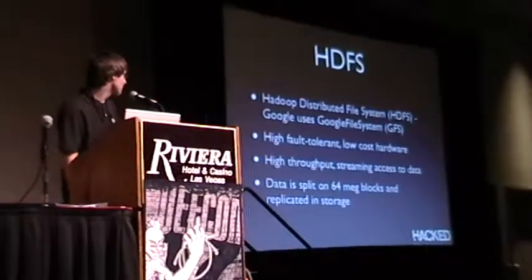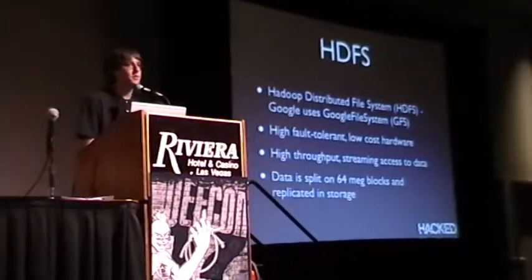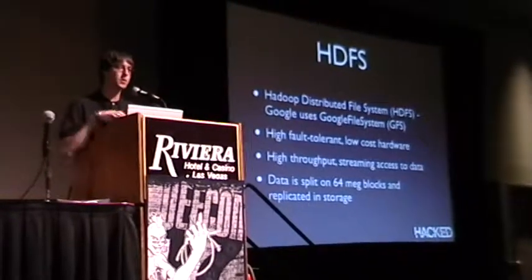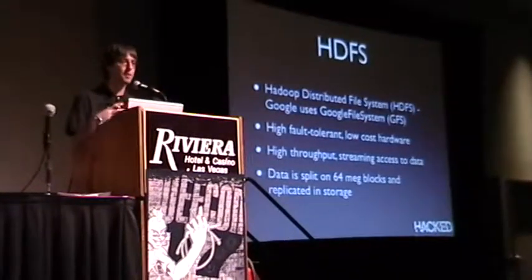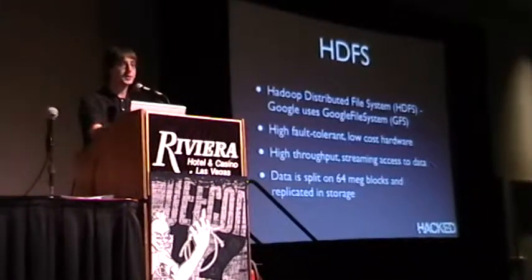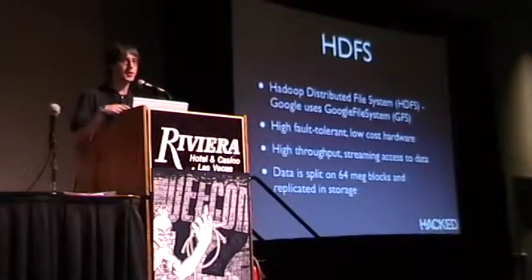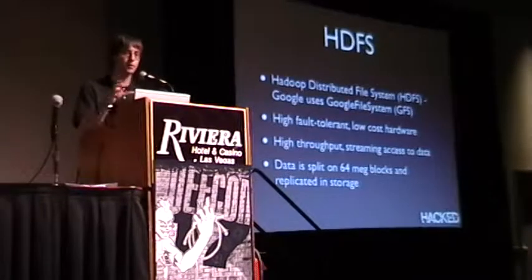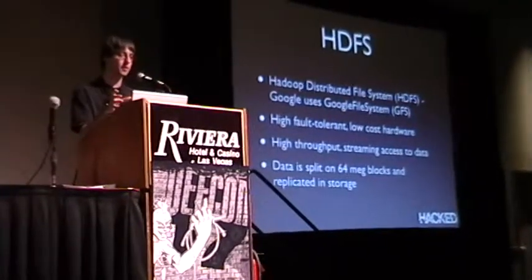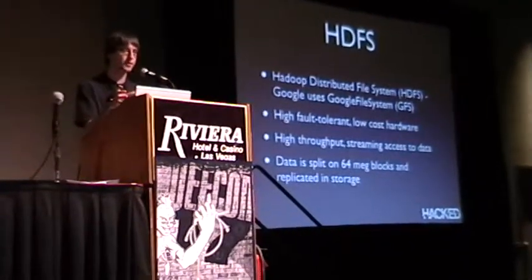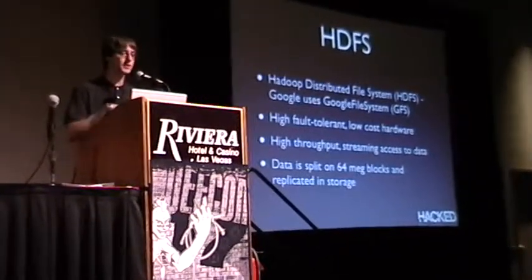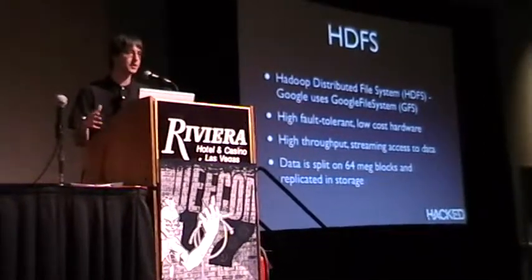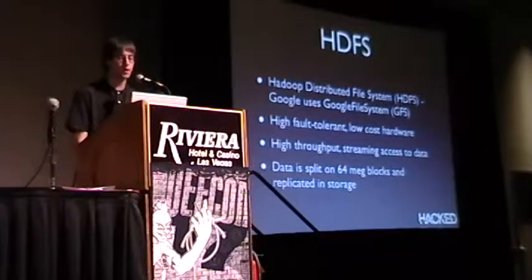Data is split into 64 megabyte blocks and replicated into storage. That 64 MB limit is important: when you create a mapper node, if you have a 65 MB file, it's going to split into a 64 MB file and a 1 MB file, and you'll create two mappers — one running at full capacity and one running really fast but very inefficiently. So you have to consider your input data carefully: how many files to split it into and what size to make each file.